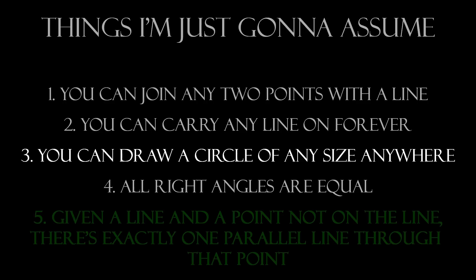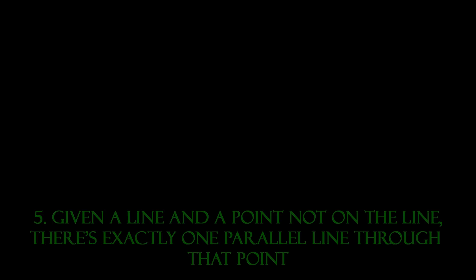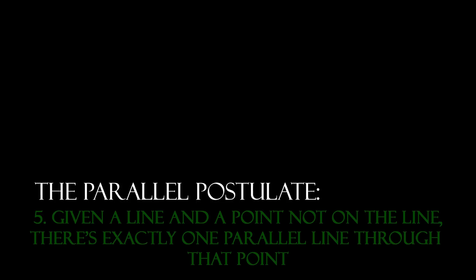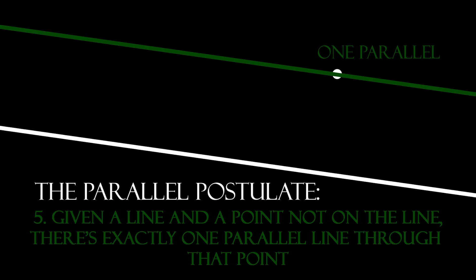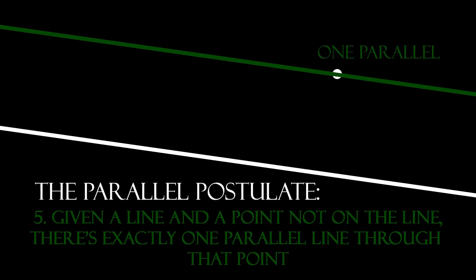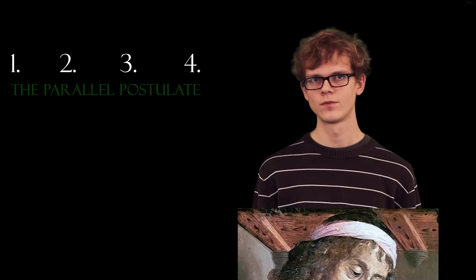But the fifth and final axiom, also known as the parallel postulate, wasn't like the others. The others are nice and simple, but the parallel postulate looks more like a theorem. Nobody could figure out how you might prove the parallel postulate from the first four axioms. Still, people went and used these five axioms to do geometry. This kind of geometry, using Euclid's axioms or rules, is called Euclidean geometry.